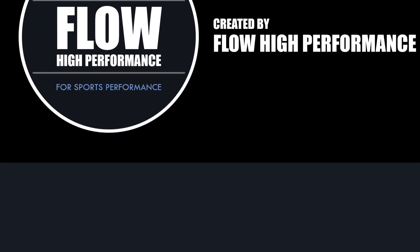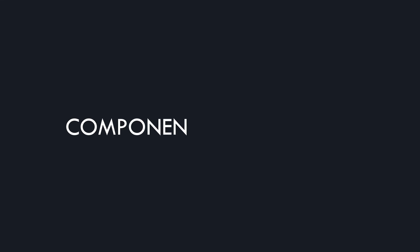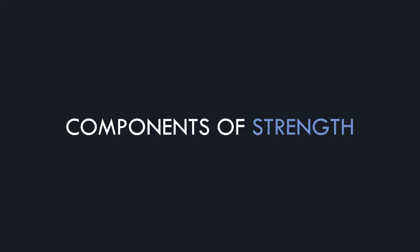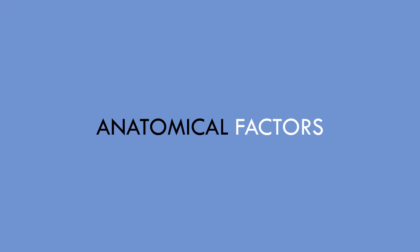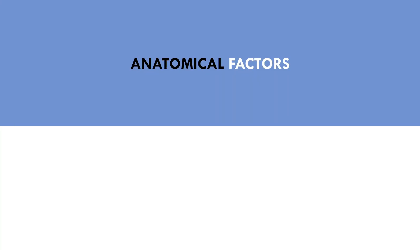First we need to explore what components contribute to the expression of strength. Essentially, we have anatomical factors that can influence strength, and adaptations that we can induce from training. Anatomical factors are things that we are born with and cannot change with training — these factors can predispose an individual to naturally be stronger or weaker.